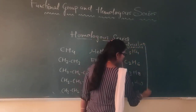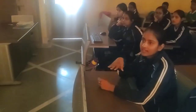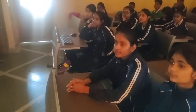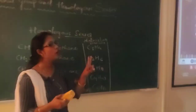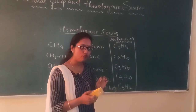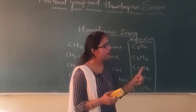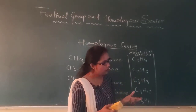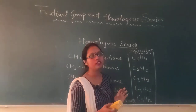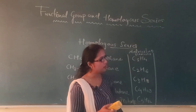Ma'am, my question is: what is the difference between alkane, alkene, and alkyne? So — when you see only single bonds between carbon–carbon, it is known as alkane. When you see a double bond between carbon–carbon, it is known as alkene. And when you see a triple bond between carbon–carbon, then you get alkyne. So this is the difference between alkane, alkene, and alkyne.